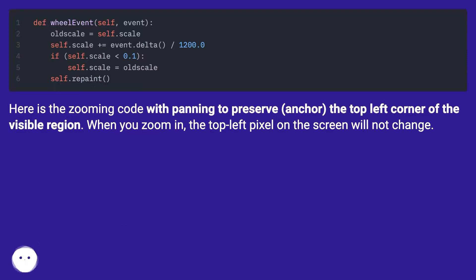Here is the zooming code with panning to preserve the anchor — the top left corner of the visible region. When you zoom in, the top left pixel on the screen will not change.